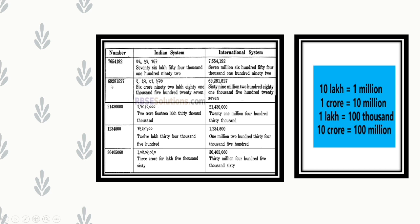Another example: the number 69,281,527. In the Indian system, we put a comma after the last 3 digits and then after every 2 digits: 6,92,81,527. In the international system, we put a comma after every 3 digits: 69,281,527. In this way we apply both systems to all examples.